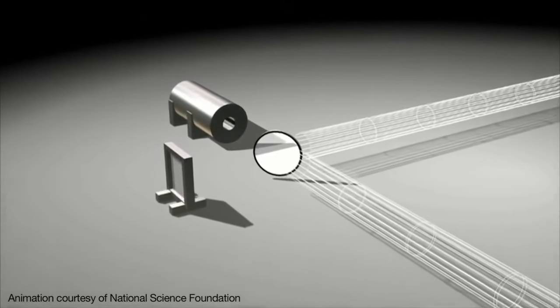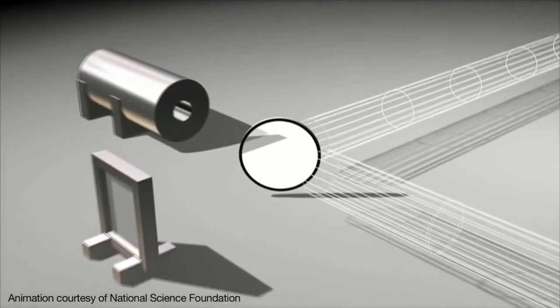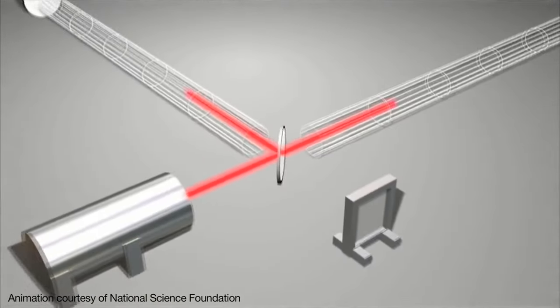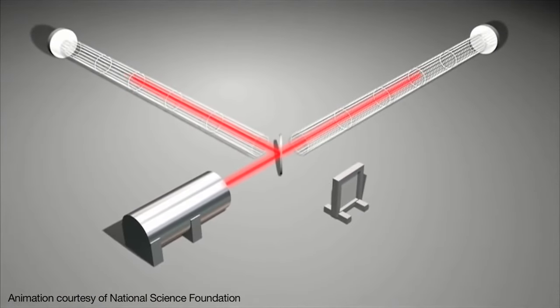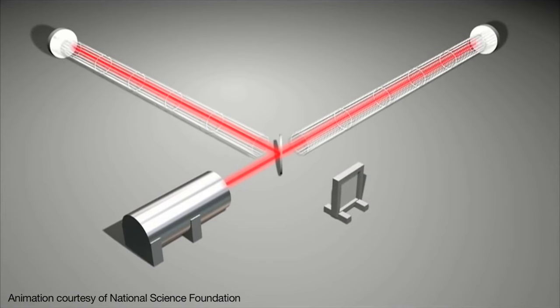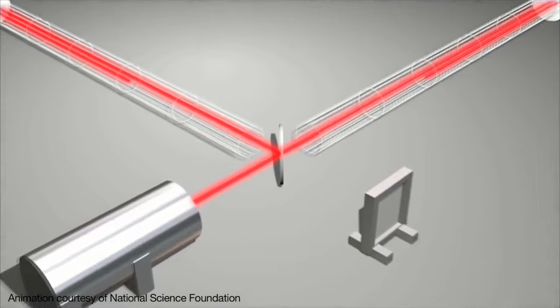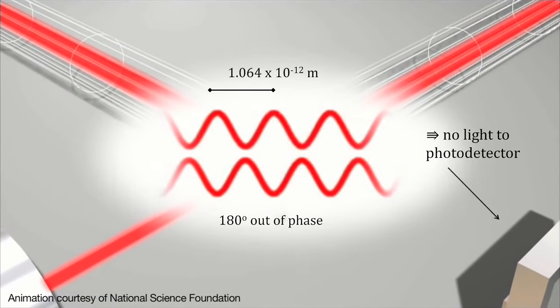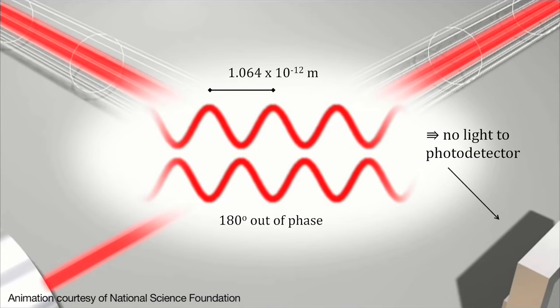The laser light is split and sent to the two mirrors. On return, they are recombined and sent to the photodetector. The beams returning from the two arms are kept out of phase, so that when the arms are both in sync as when there is no gravitational wave passing through, their light waves subtract and no light arrives at the photodetector.